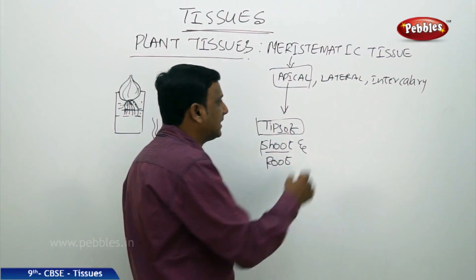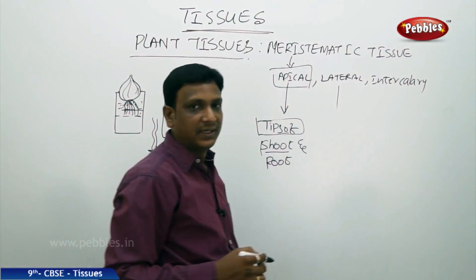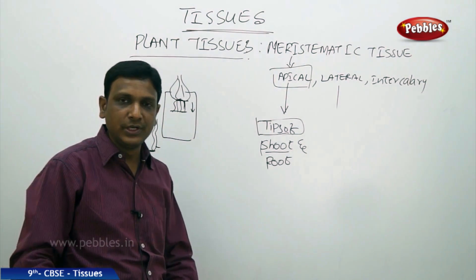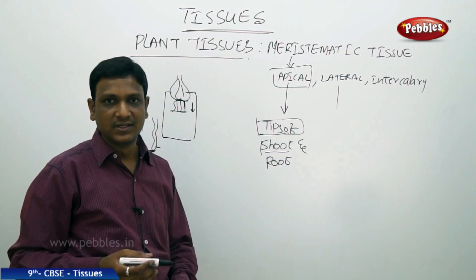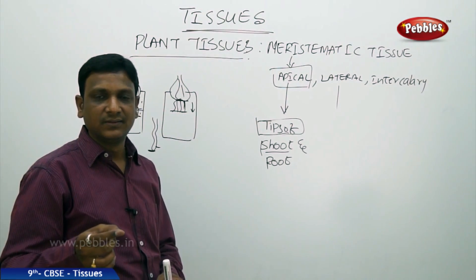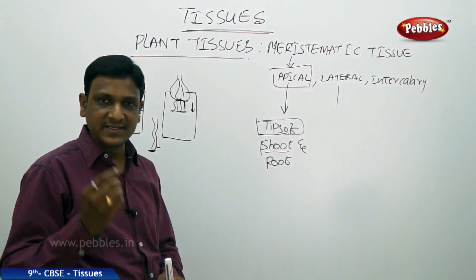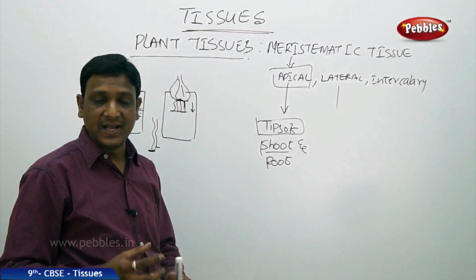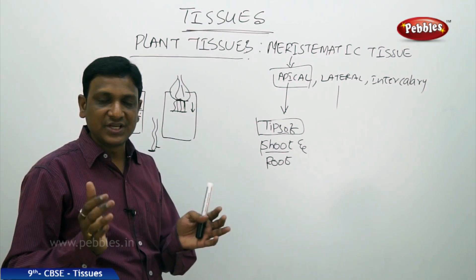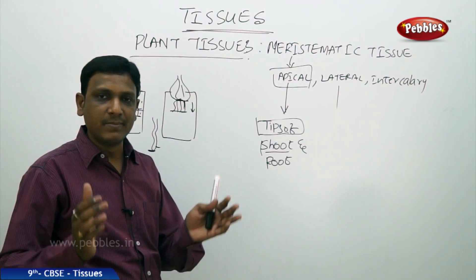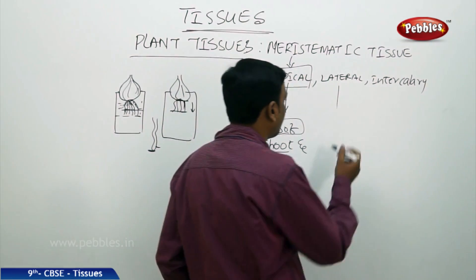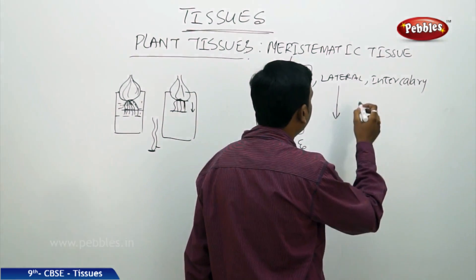The lateral meristem helps in increasing the girth — that is, the width — of the plant. A plant does not only grow lengthwise; its width also increases. The trunk and stem become fat as the tree grows, becoming a thick trunk. This increase in width happens because of the lateral meristem.